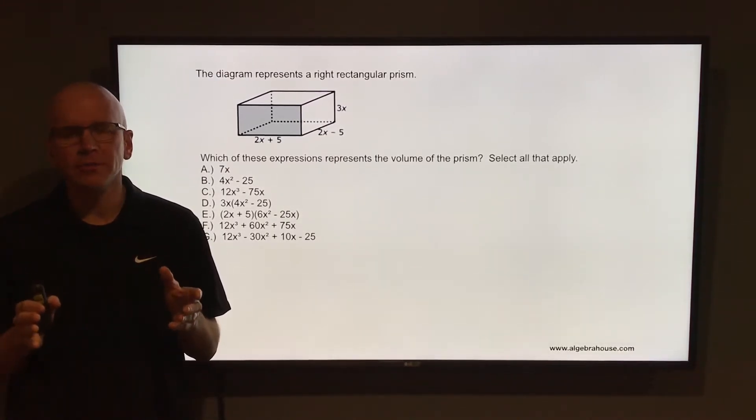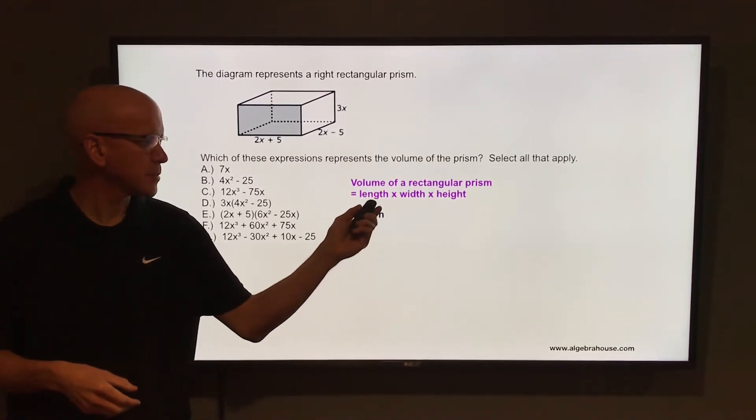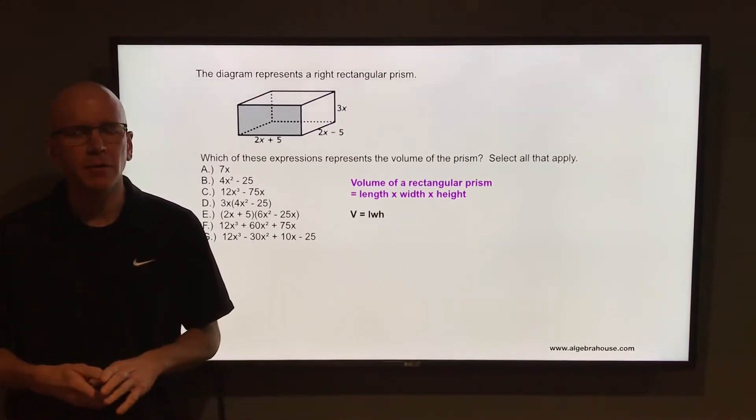The volume of the prism is the amount of space on the inside of the prism. To get that, you would multiply length times width times height, or in this case V equals LWH.